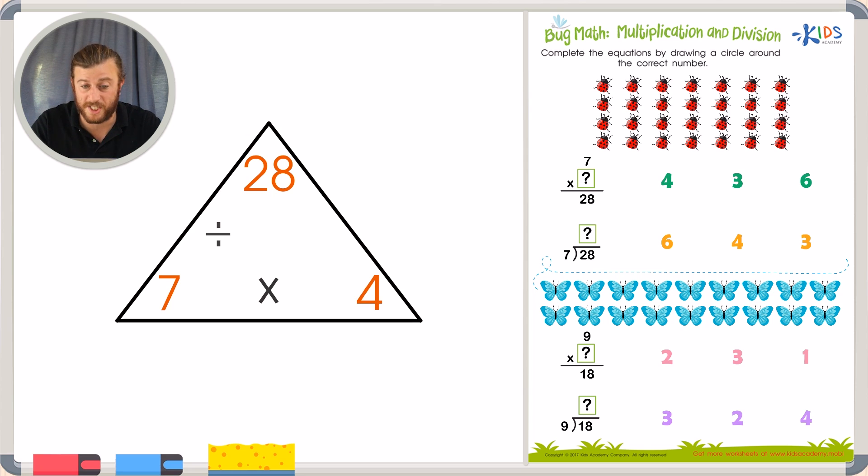Let's check our work by skip counting. Let's skip count by 7s and let's see if we can land on 28. We'll use our hands to keep track of how many times it takes us. 7, 14, 21, 28. That's 1, 2, 3, 4. So already, something else lets me know that I think 4 is the correct answer.